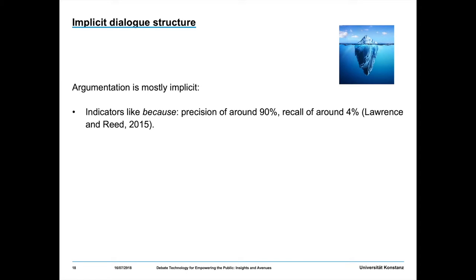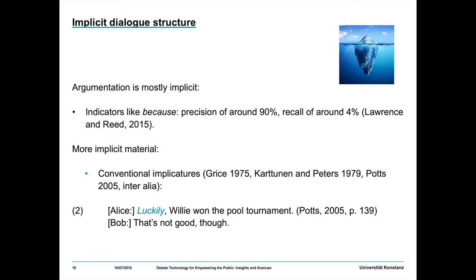Given that we're speaking about argumentation, I want to present one phenomenon I'll focus on in the next one or two years of my research. Argumentation is mostly implicit. With indicators like 'because', we find a precision of around 90% that it signals a support relationship between discourse units. But recall is only around 4% — so using 'because' we only capture 4% of all support relations. However, in natural spontaneous discourse there's another way to identify implicit material: conventional implicatures.